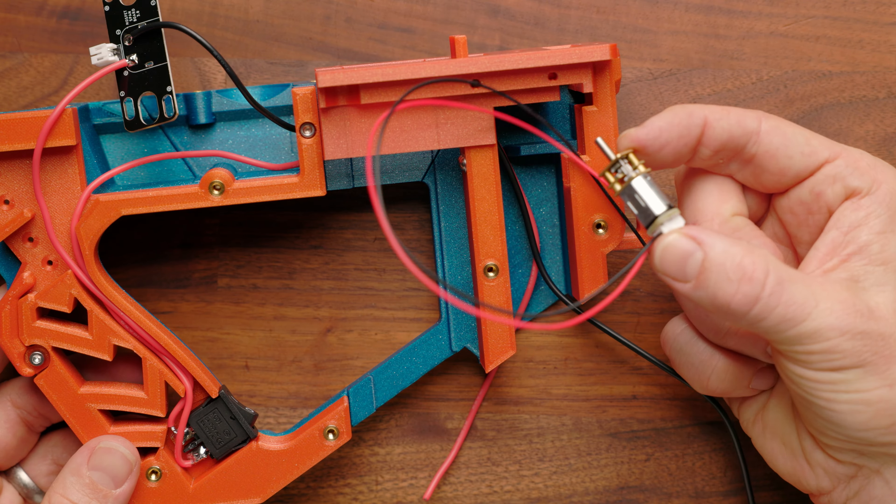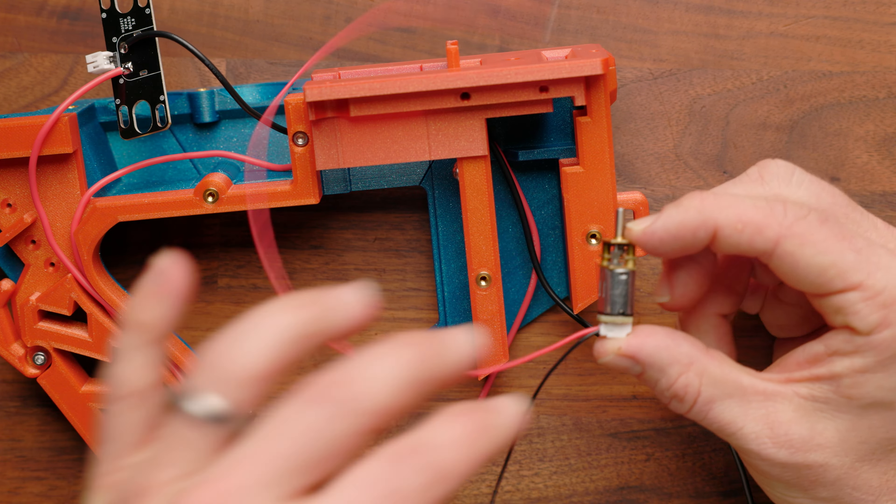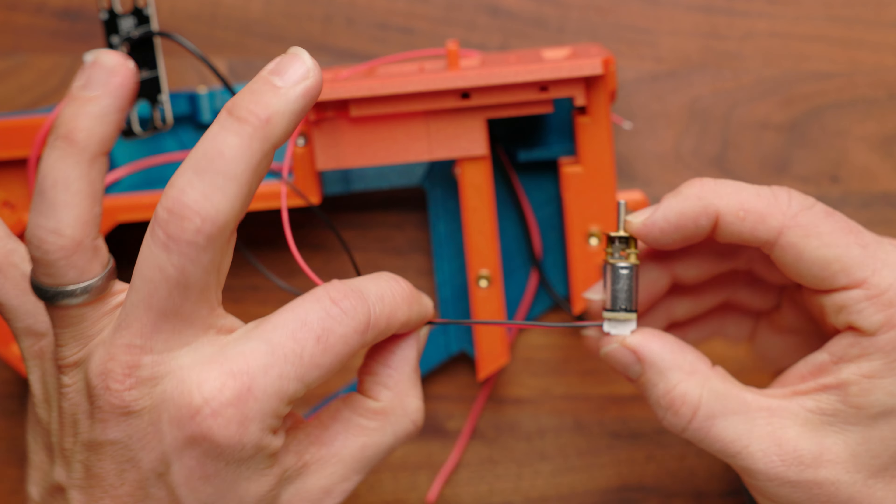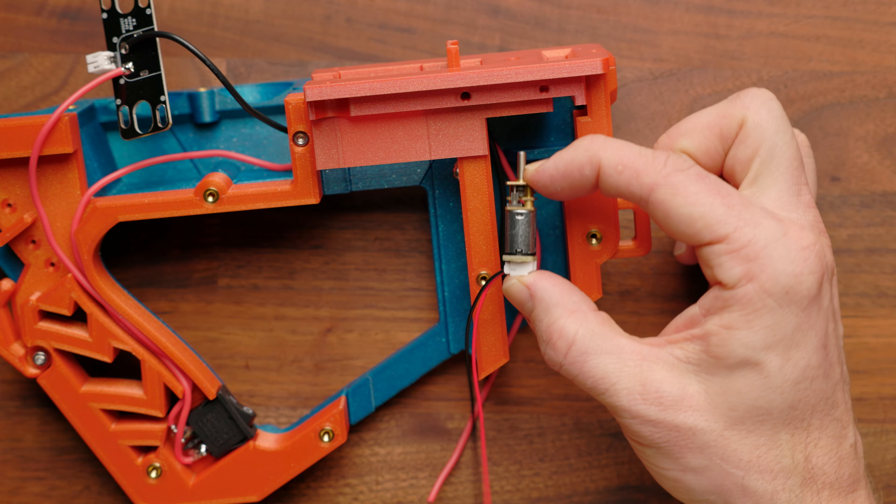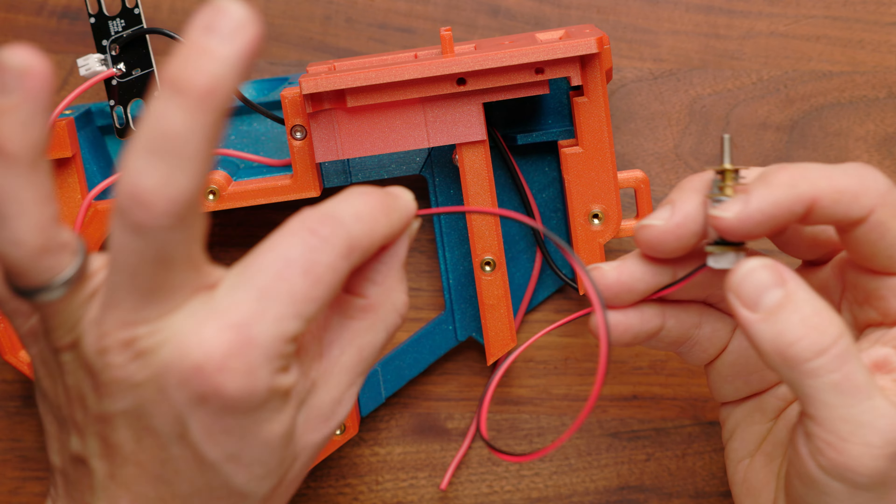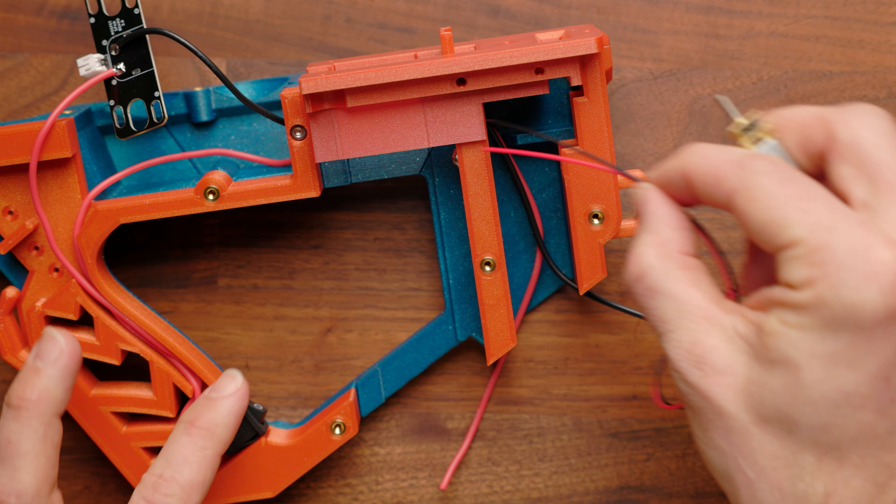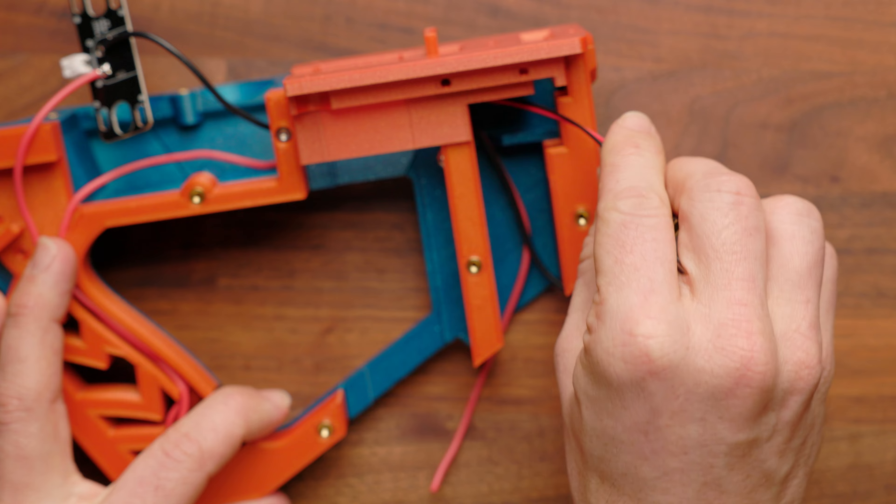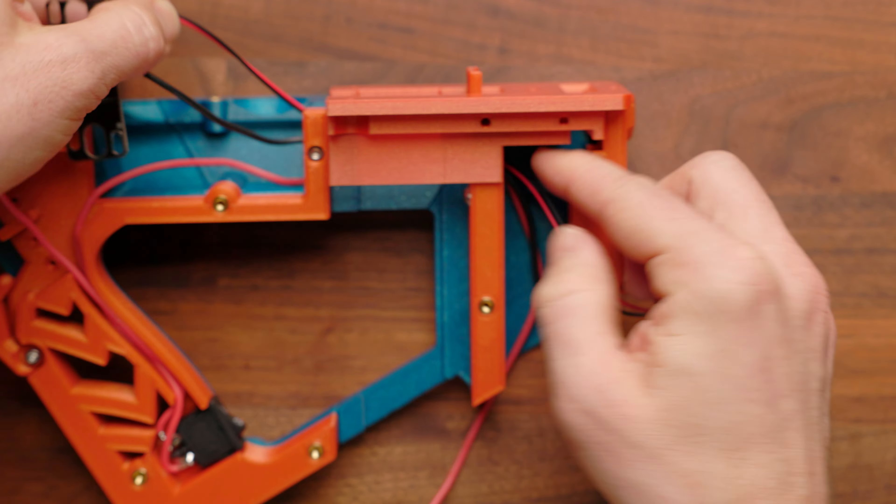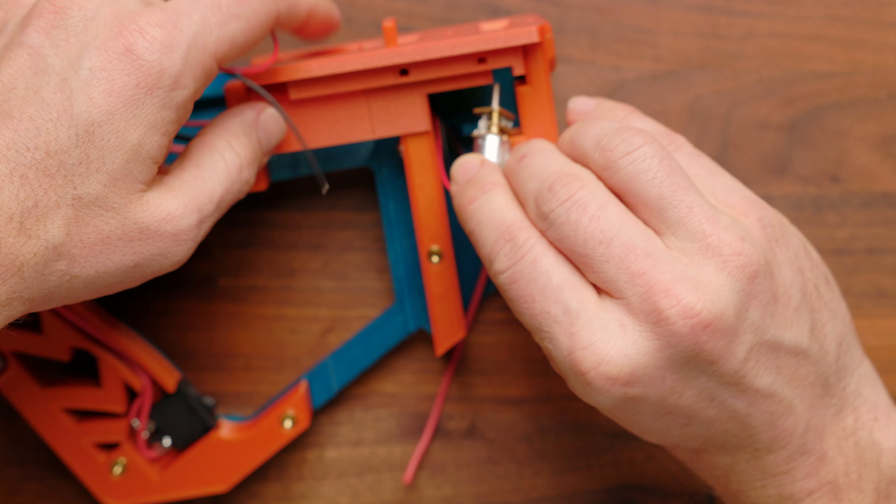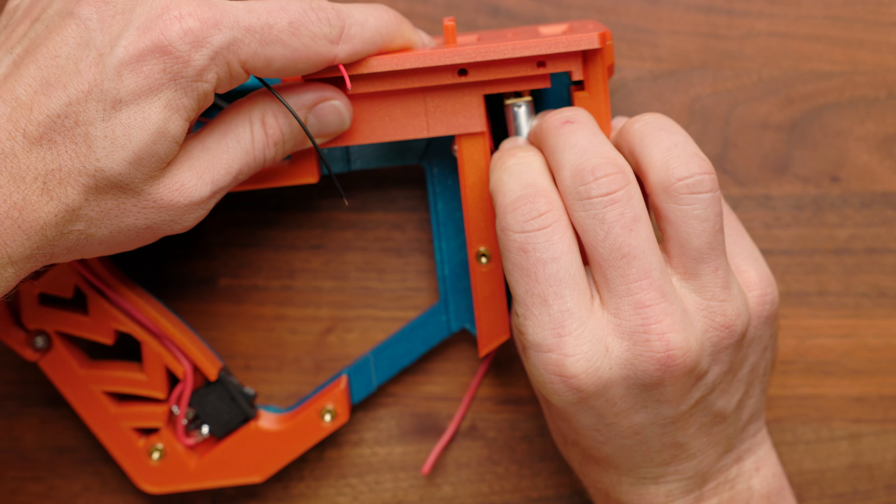Now we're going to take our N20 gear motor that we previously soldered and attached the JST connector to, and it's going to face this way, and it's going to go straight up through this hole. And as you're doing that, these wires are going to go back through that same wire channel to the main flywheel cavity here. So it's kind of a two-step or simultaneous operation.